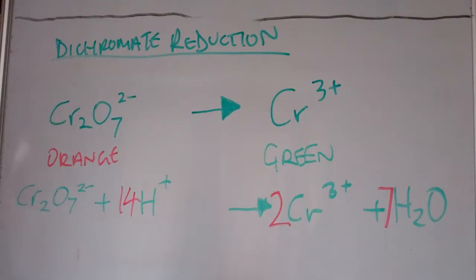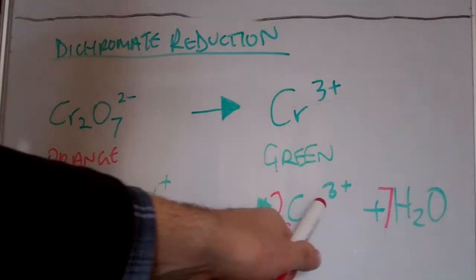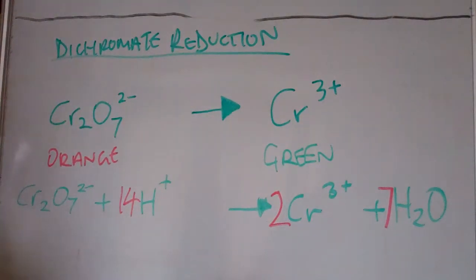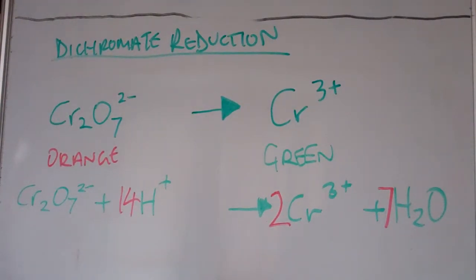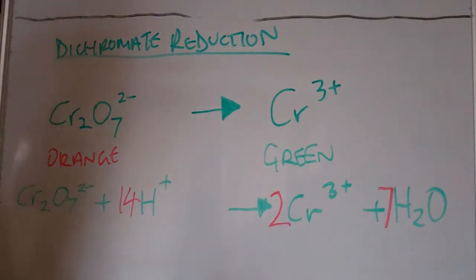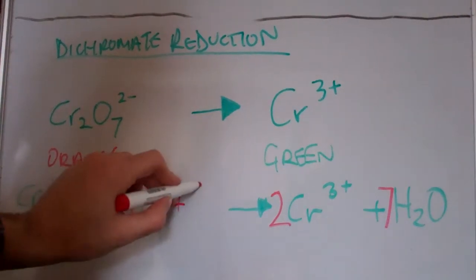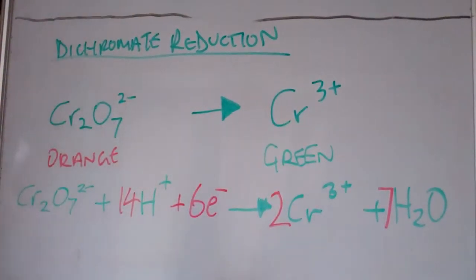On the right hand side we've got two 3+, that's 6+. And on the left hand side we've got 14 plus and 2 minus. 14 plus and 2 minus gives you a total of 12 plus. So we actually need to add 6 electrons here for our balanced charge.